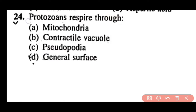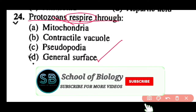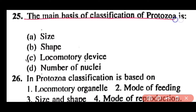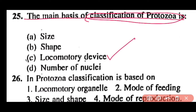Question 24: Protozoans respire through mitochondria, contractile vacuole, pseudopodia, or general surface? Correct answer is option D. Protozoans utilize the general surface for respiration. Question 25: The main basis of classification of protozoa is size, shape, locomotory device, or number of nuclei? Correct answer is option C. Locomotory devices — such as pseudopodia, flagella, and cilia — are the basis of classification of protozoa.